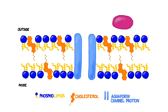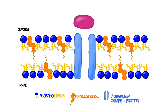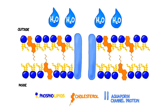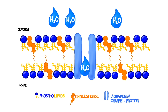Remember that cell membranes are selectively permeable. They allow certain particles to pass through, but not others. Usually, larger molecules can't fit through the membrane without special channels. The cell membrane is fitted with special protein channels called aquaporins, which allow water molecules to pass through without expending energy. However, the ease with which the water molecules can cross is going to depend on something called the concentration.